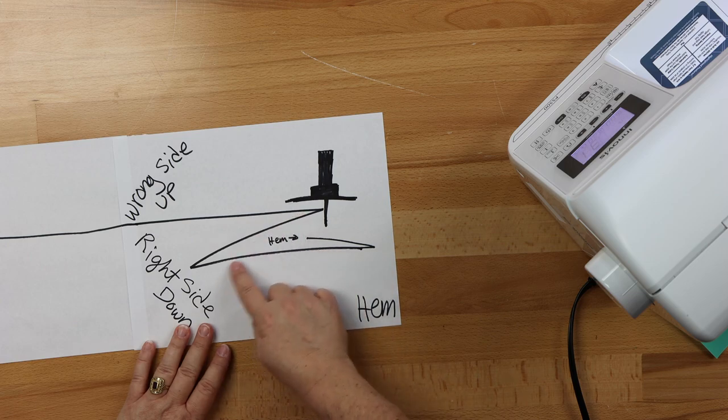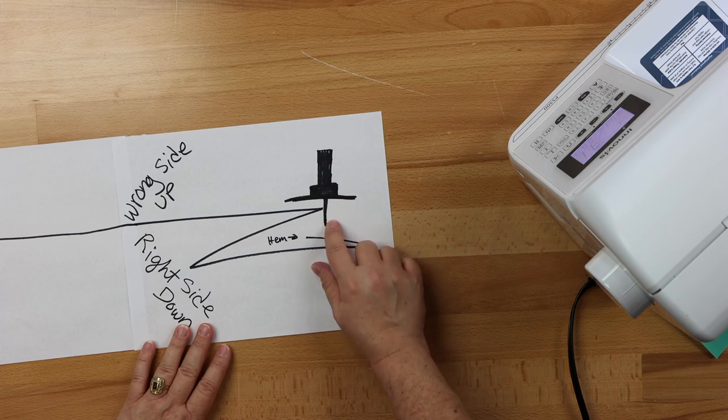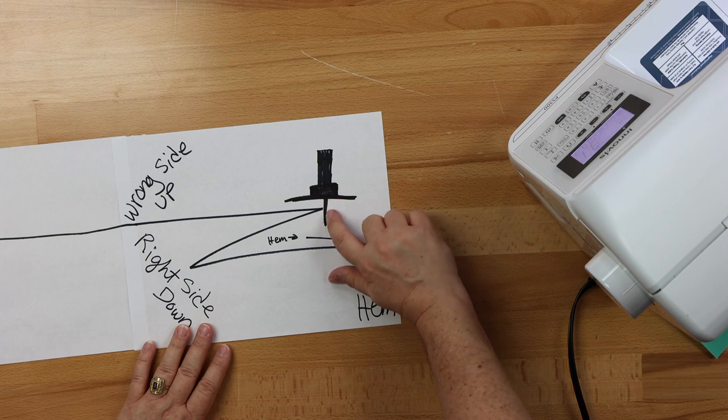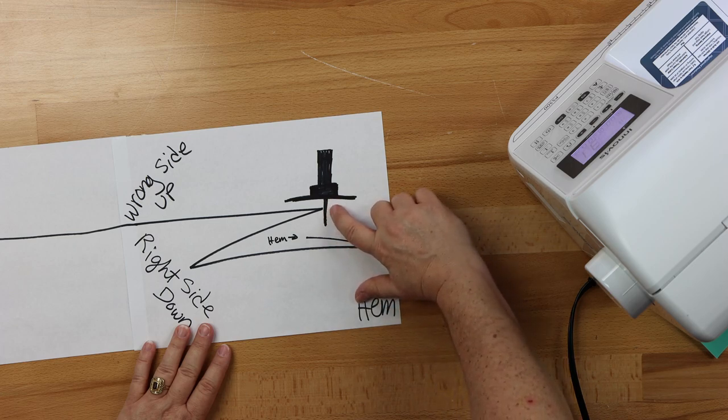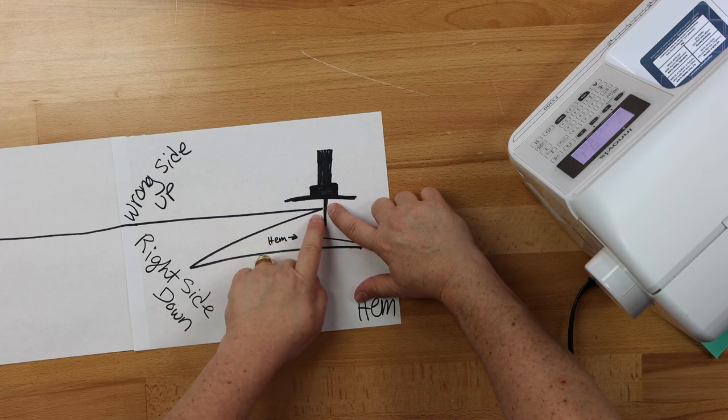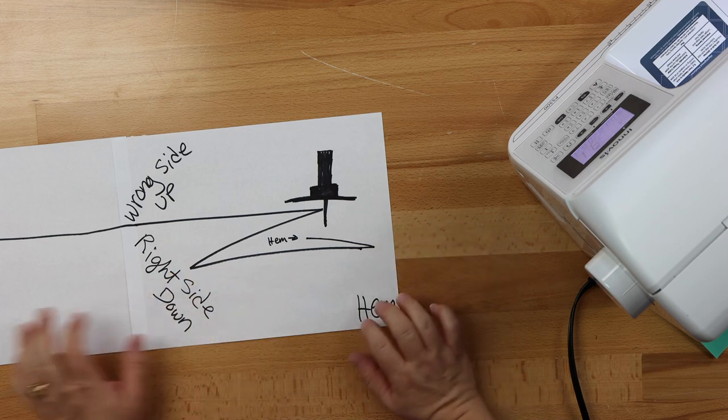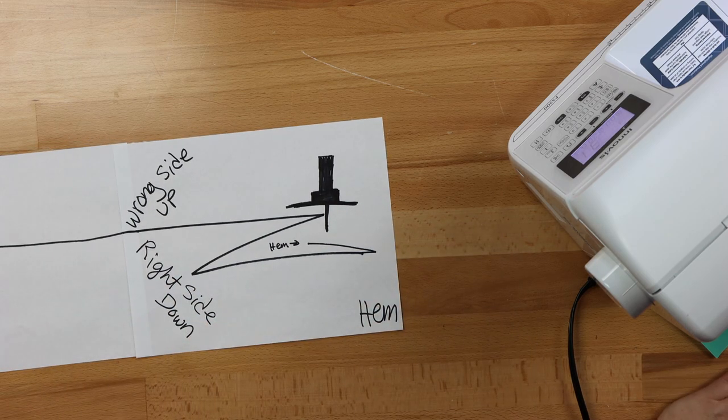It creates a fold and what happens is this is your blind hem foot. There is a little bit of a guide on the foot and I'll do an up close of that. So there's a little bit of a guide on the foot and that guide is butted right up against this fold in your fabric. Okay, so that's how it's created. All right, let's come over here and look at this foot.